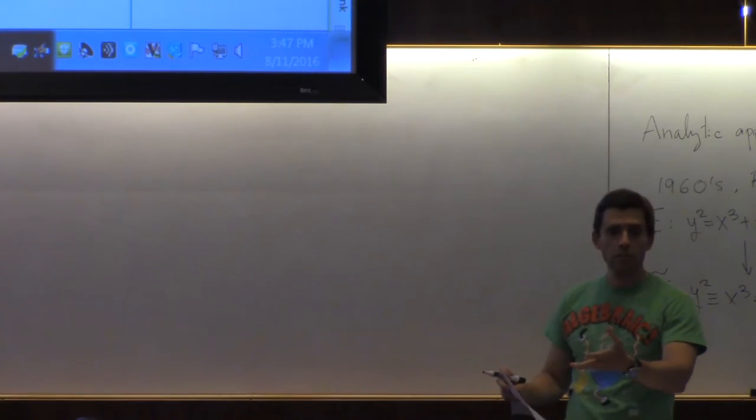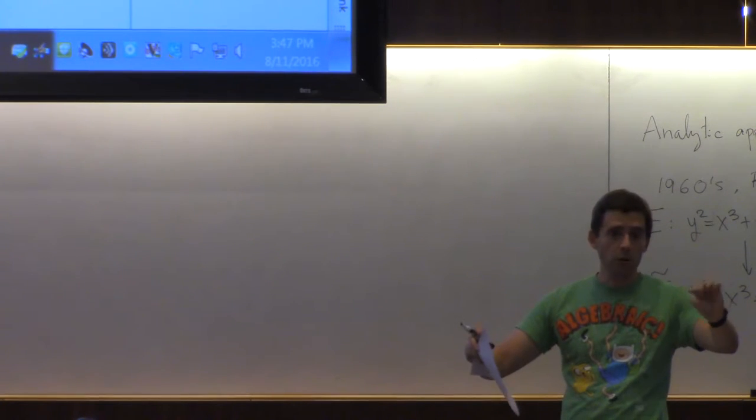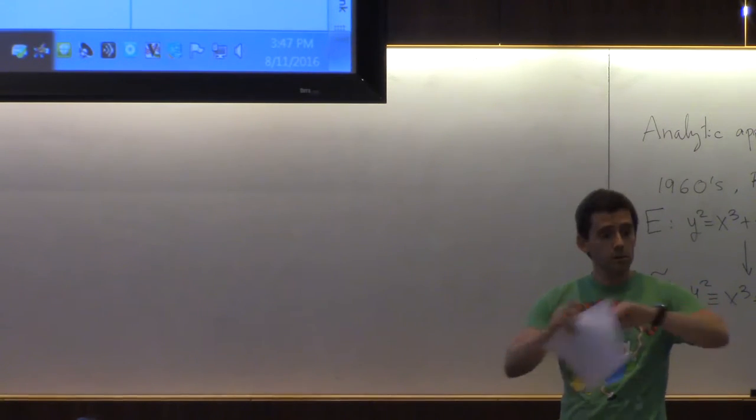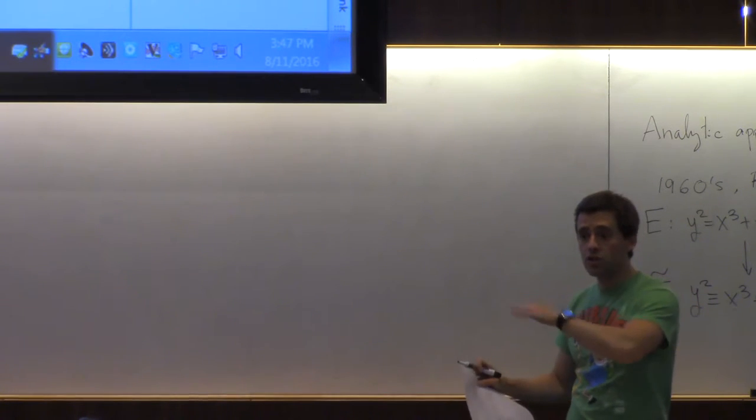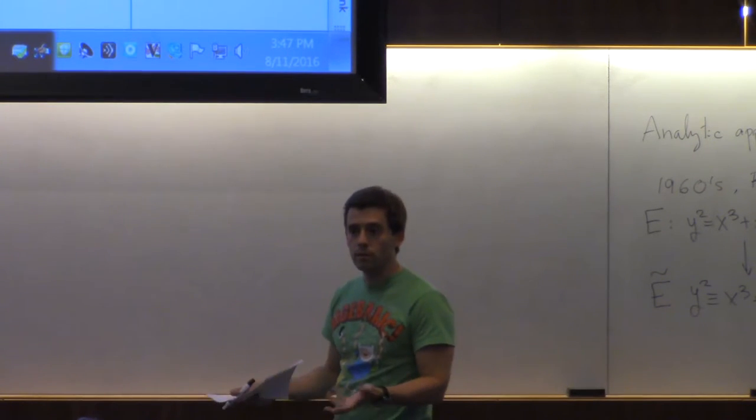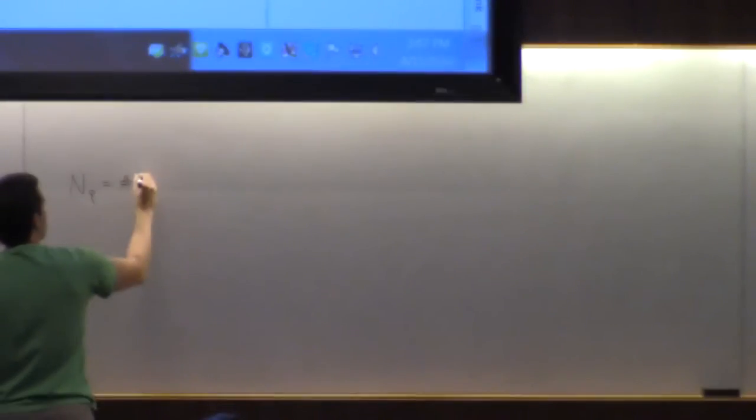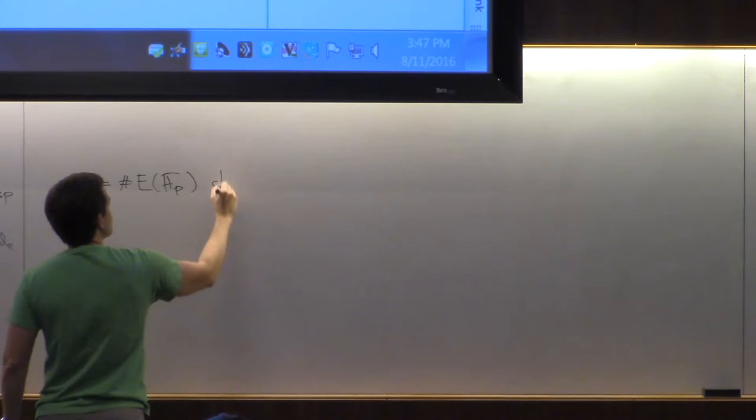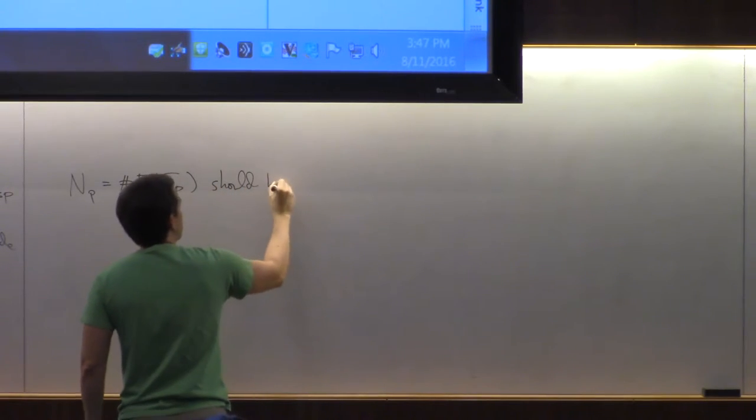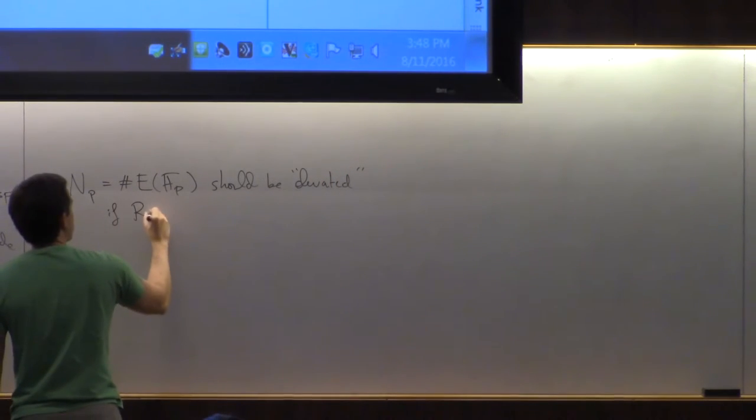Okay? Because the points, if you have a rational point, for most primes, I'm going to be able to reduce them, and in fact, for all primes, I'm going to be able to reduce them if you take them in projective coordinates. You might be worried about primes in the denominator, just take it in projective coordinates, we can make it all integer coefficients, and reduce those. So you reduce those, and you start getting points, so what they thought is that N_p should be elevated if the rank is high.